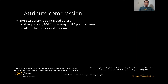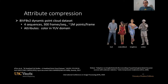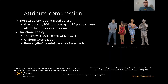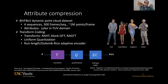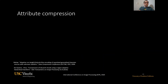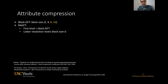Now I will talk about attribute compression. We consider the 8i dataset of dynamic point clouds, which has four sequences, and we compress the colors in the YUV domain. We use a standard transform coding scheme where we compare three different transforms: the RAT, the block GFT, and the RAGFT. Everything else is fixed — we use uniform quantization and run-length Golomb-Rice entropy coding, which adapts to the statistics of the input. For the block GFT, we consider block sizes 2, 4, 8, and 16. For the RAGFT, at the first level we use the same settings as the block GFT, and for lower resolution levels we set all block sizes equal to 2.